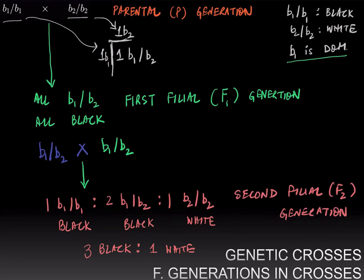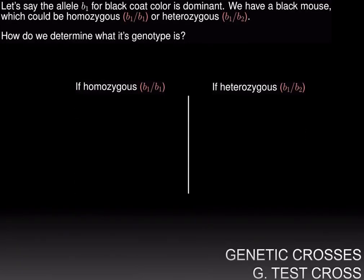Furthermore, the alleles must be segregating equally — meaning there must be equal numbers of gametes carrying each allele. Otherwise, you would not obtain the 3 to 1 ratio that Mendel observed in his crosses. Next, let's discuss a special type of cross called the test cross. Let's say the allele B1 for black coat color is dominant, and you are given a mouse whose coat color is black, so you know the phenotype. What genotype would it have?